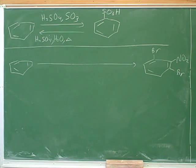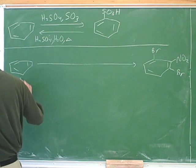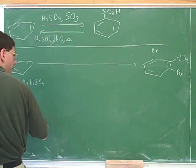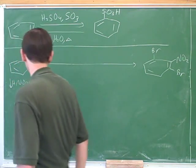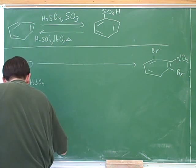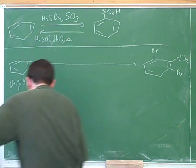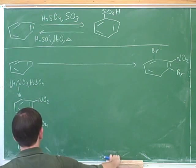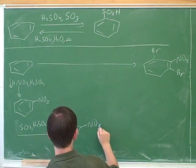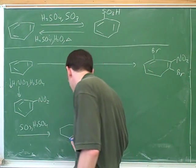So first add the nitro group. Good, and the reagents for that are HNO3 and sulfuric acid. Then we can add the sulfone group. Now, where's that sulfone group going to end up? Well, this was a meta-director, so it's going to end up in one of the two equivalent meta-positions.